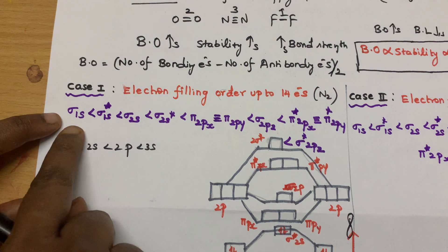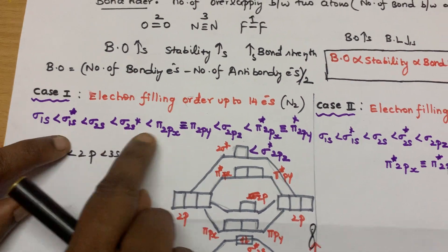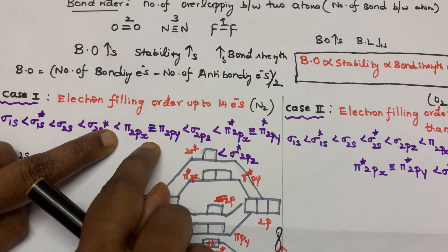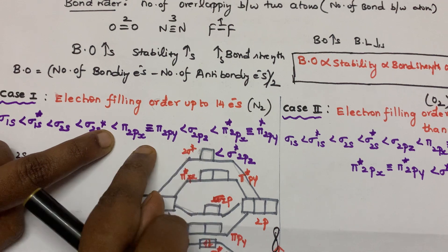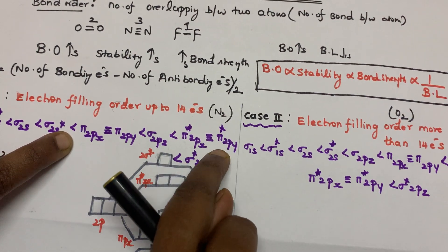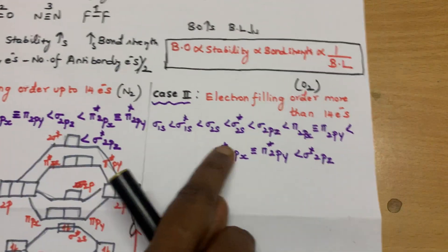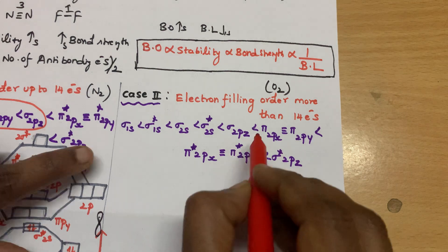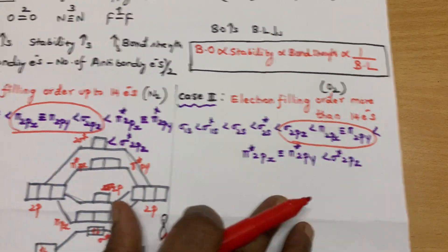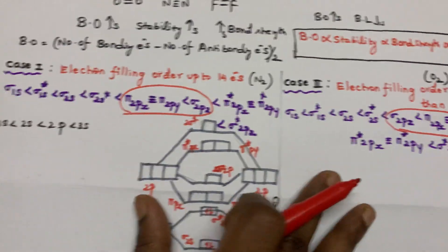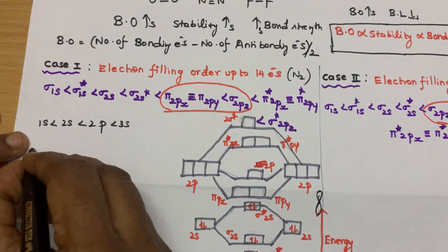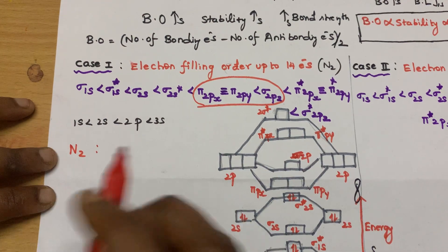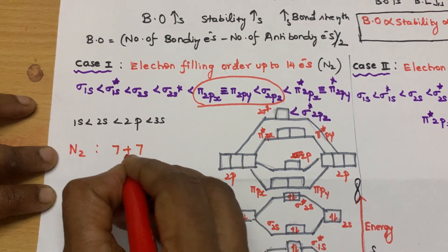Let's try for nitrogen. Nitrogen has 7 electrons, and another nitrogen also has 7 electrons, so 7 plus 7 equals 14 electrons total. You arrange these in order of increasing energy, following Pauli's exclusion principle.